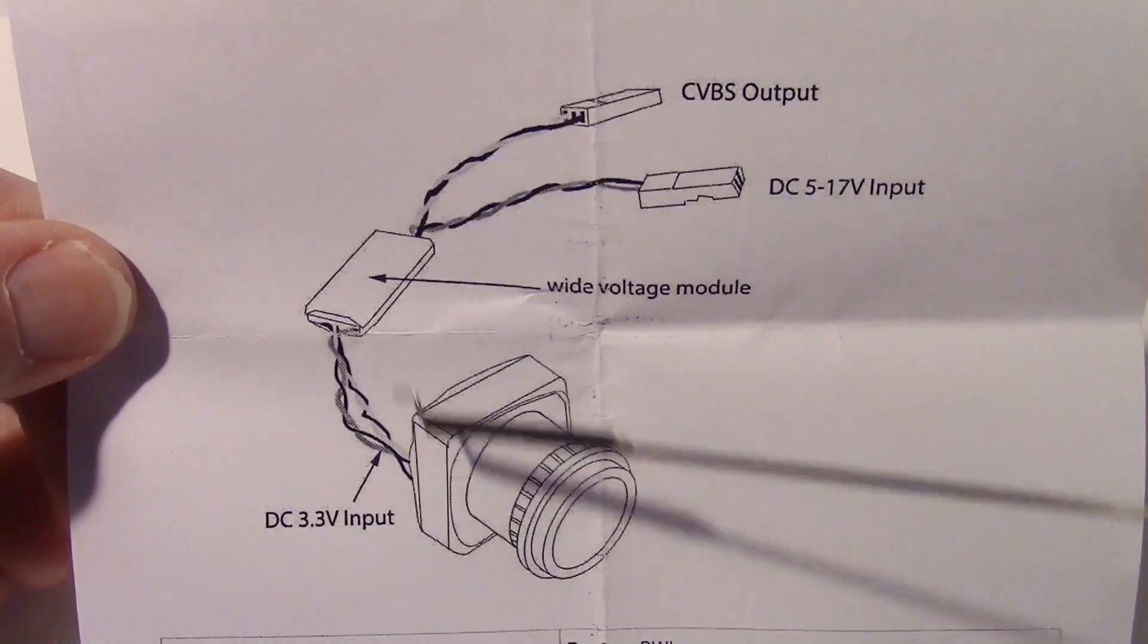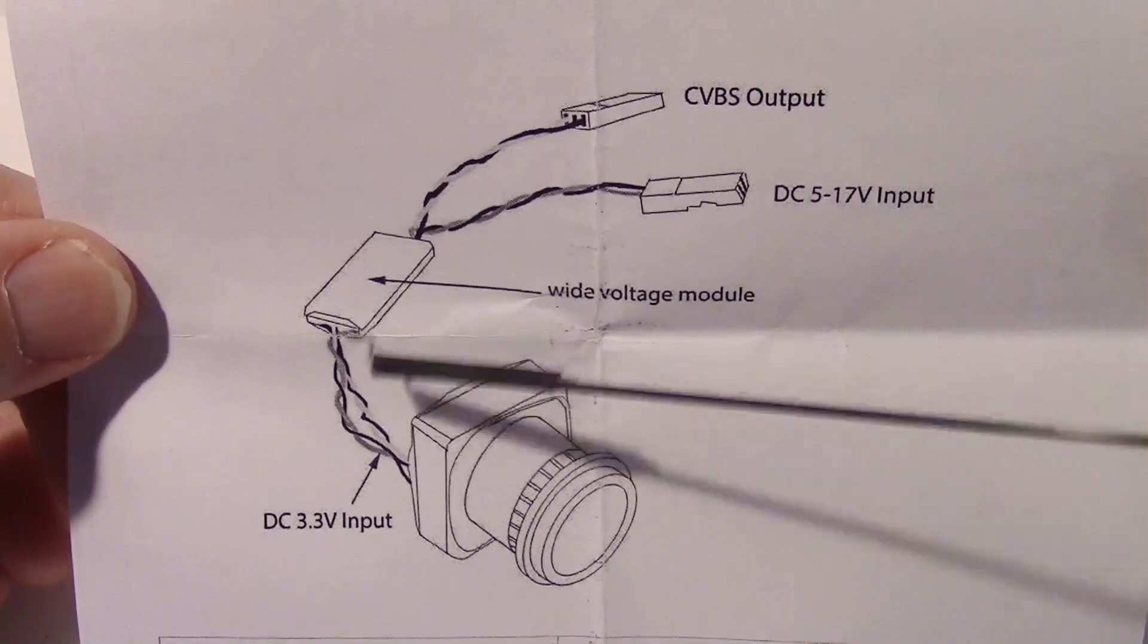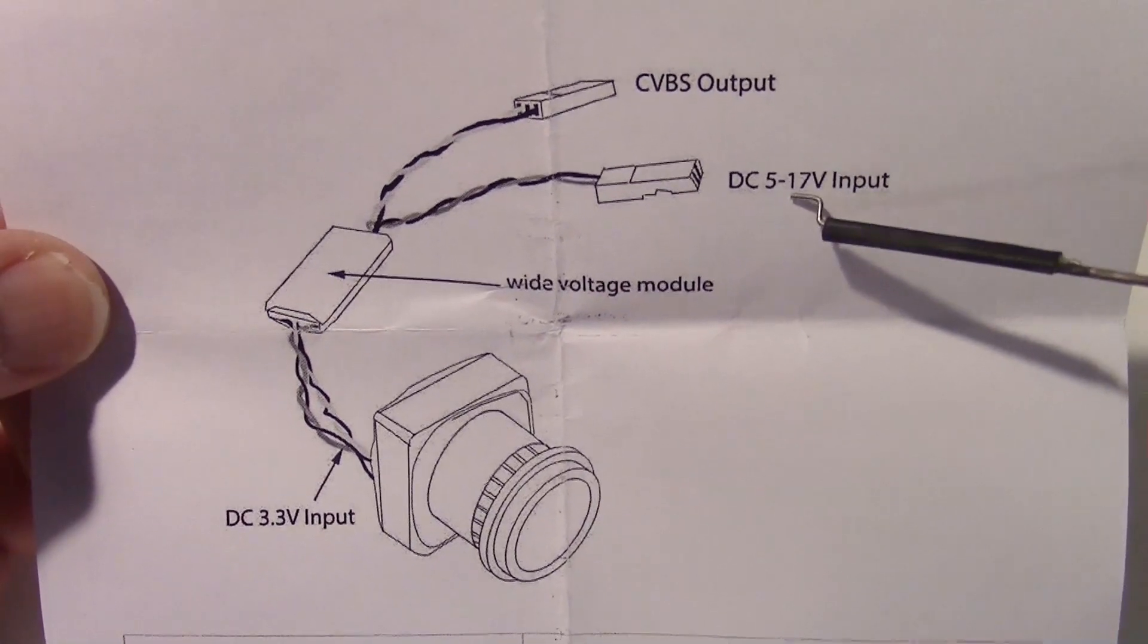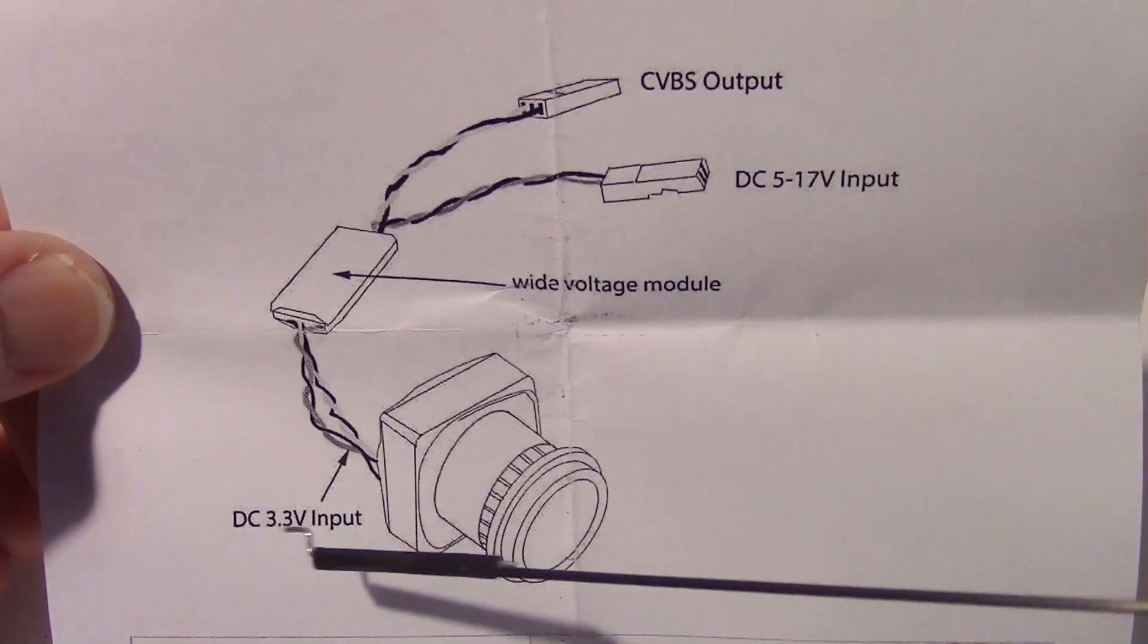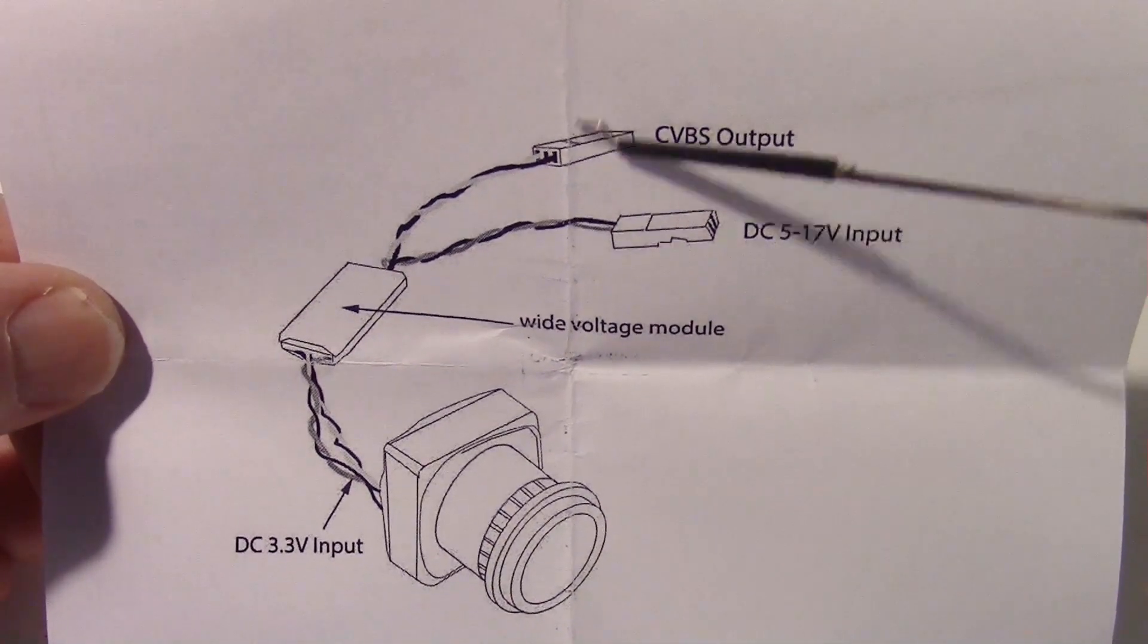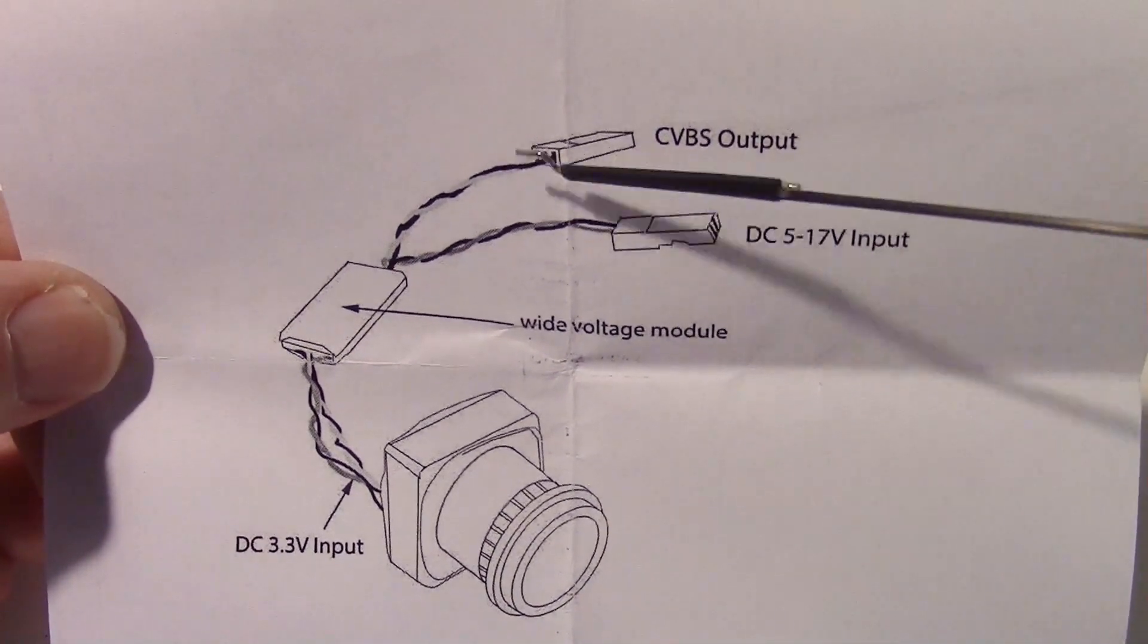This is the basic wiring setup. There's a little voltage module right here so you can use 5 to 17 volts input, and this breaks it down to 3.3 volts. This over here is where the video comes out.